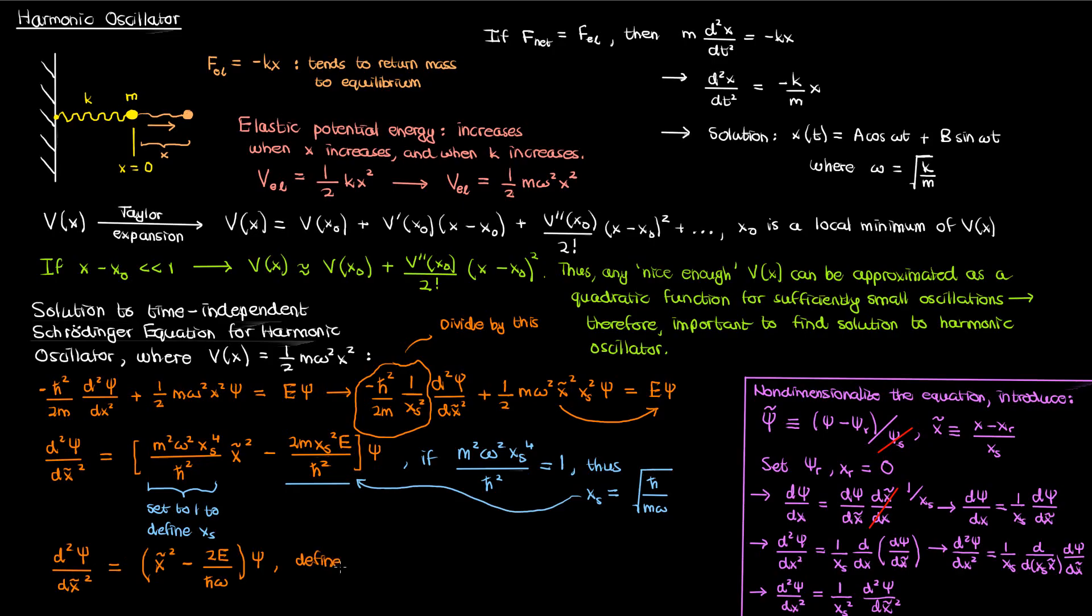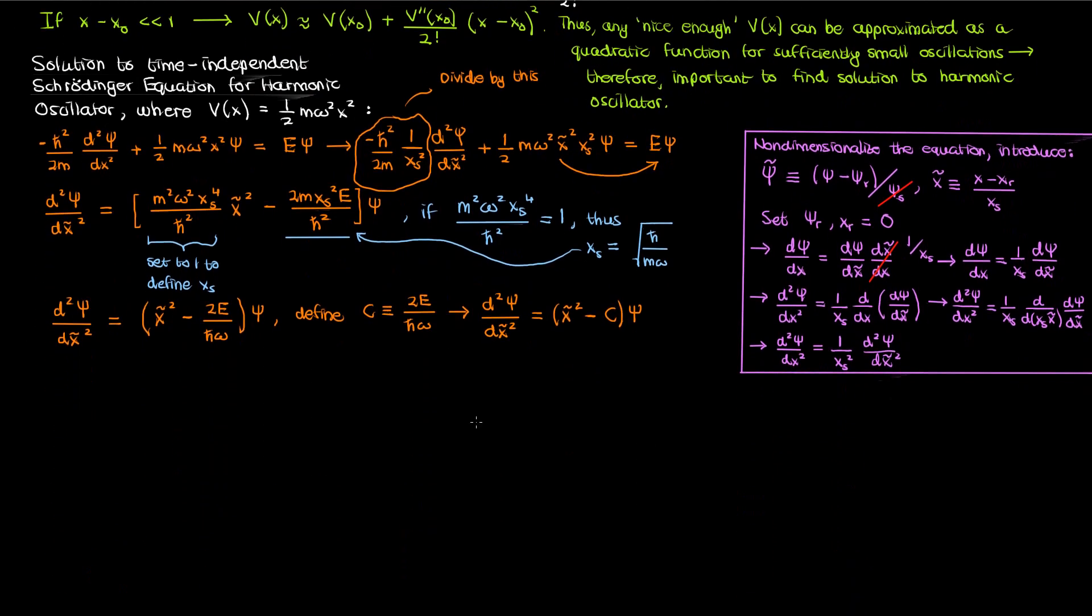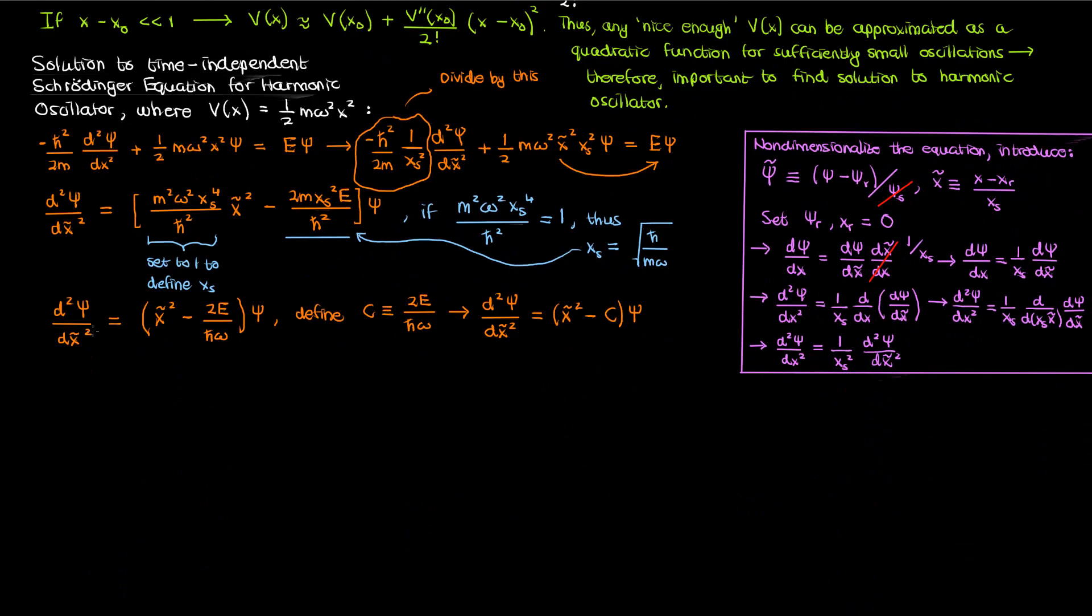Plugging this x sub s into the second coefficient now leaves us with the following for our differential equation. At this point I'll define another constant c equal to 2e over h bar omega just to simplify my writing once again. Once I do that I'll get the second derivative of psi with respect to x tilde equals x tilde squared minus c times psi. So after all that work we finally set up the partially dimensionless time independent Schrödinger equation and let's now go ahead and solve it.